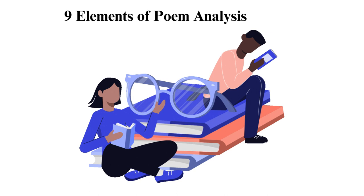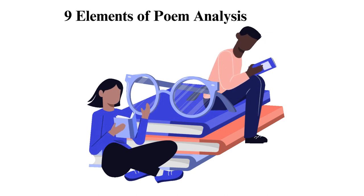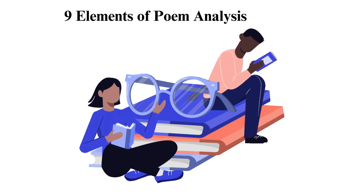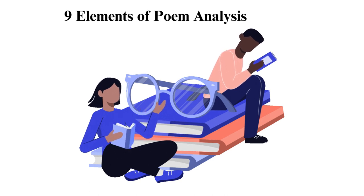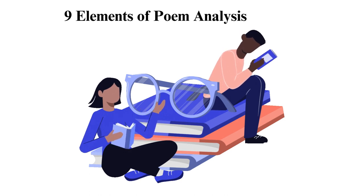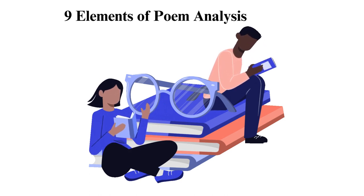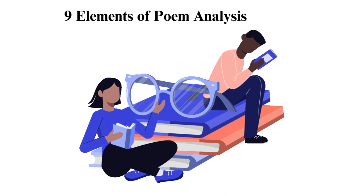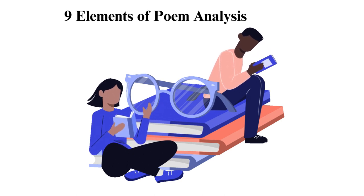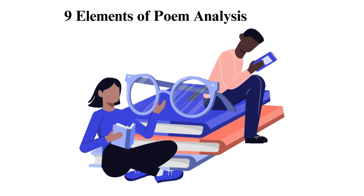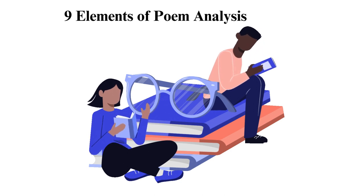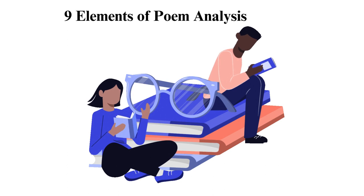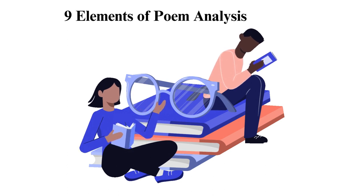Rhyme is the repetition of syllables or use of similar sounding words in the middle or end of a verse. Meter describes the rhythm or beat pattern in a single line of poetry. It looks at the number of stressed syllables in a text and their arrangement. An example is the iambic pentameter. Theme refers to the subject or lesson to be learned from a poem. Context explains the time, place, and circumstances that influence the work in question.